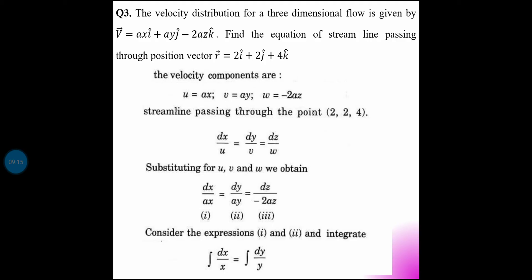The velocity distribution for a three-dimensional flow is given by V = ax·i + ay·j - 2az·k. We need to find the equation of the streamline passing through position vector r = 2i + 2j + 4k.